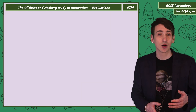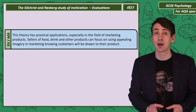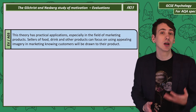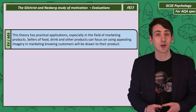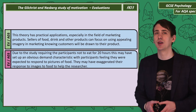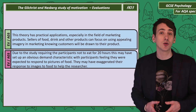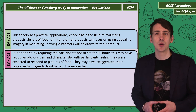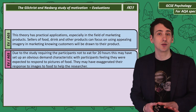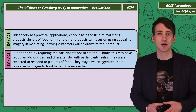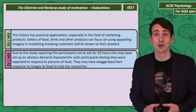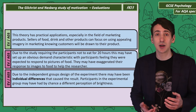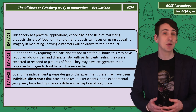Evaluating Gilchrist and Nesberg's study, we can think of practical applications: food marketers may want to focus on how they use imagery in promoting their products, knowing it will attract hungry customers. However, we can criticise the study because asking participants not to eat for 20 hours might have set up a demand characteristic, with participants feeling expected to respond to pictures of food in an exaggerated way. The study also used an independent groups design, meaning there could have been individual differences between the groups in their perception of brightness.